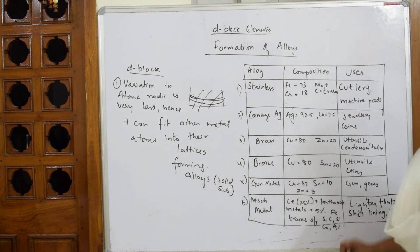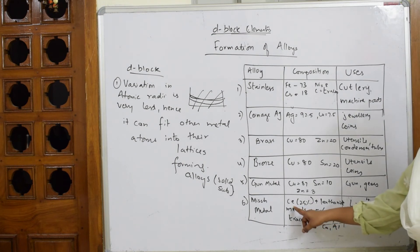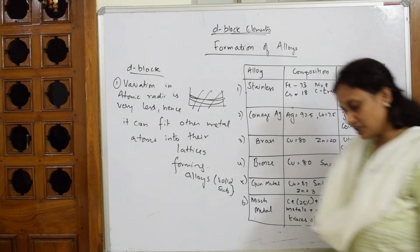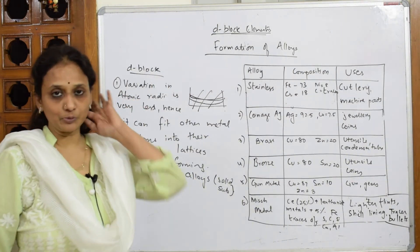Mish metal is a combination of rare earth metals, that is lanthanides. Here, just see: 95% cerium, 25% lanthanide metals, 5% iron, and traces of sulfur, carbon, silicon, calcium, and aluminum. The uses of this are also given.